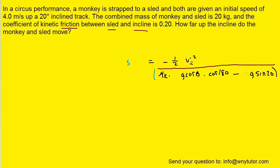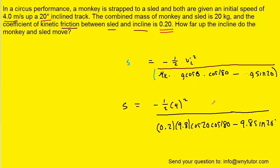And then we're finally ready to plug in all the known values. We have the initial speed of 4 meters per second. Theta was the 20 degree angle. Mu k was the coefficient of kinetic friction. And g is 9.8. And when you carefully plug that into your calculator, you should get approximately 1.54 meters for the value of s. And that is indeed how far up the ramp the monkey and sled will slide.